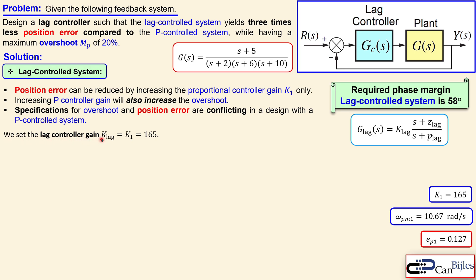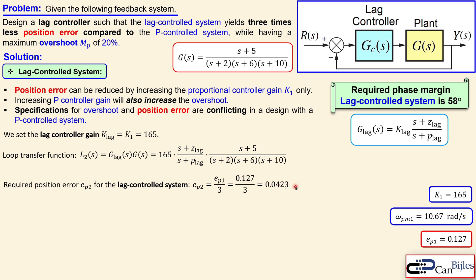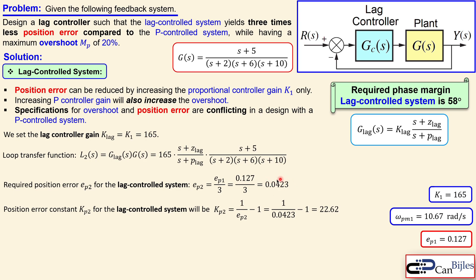We set the lag control gain K_lag equal to K1 = 165. This can be done when applying some approximations in the analysis. So K_lag = 165 is now determined, leaving only Z_lag and P_lag to find. The new loop transfer function L2 for the lag control system contains 165, the lag ratio, and the plant. The required position error for the lag control system must be three times smaller than EP1, which gives us our target error value.